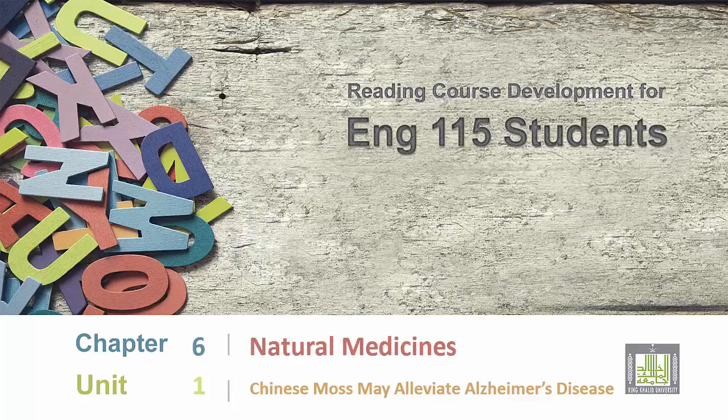Reading Course Development for English 115 Students. Chapter 6: Natural Medicines, Unit 1. Chinese Moss May Alleviate Alzheimer's Disease.